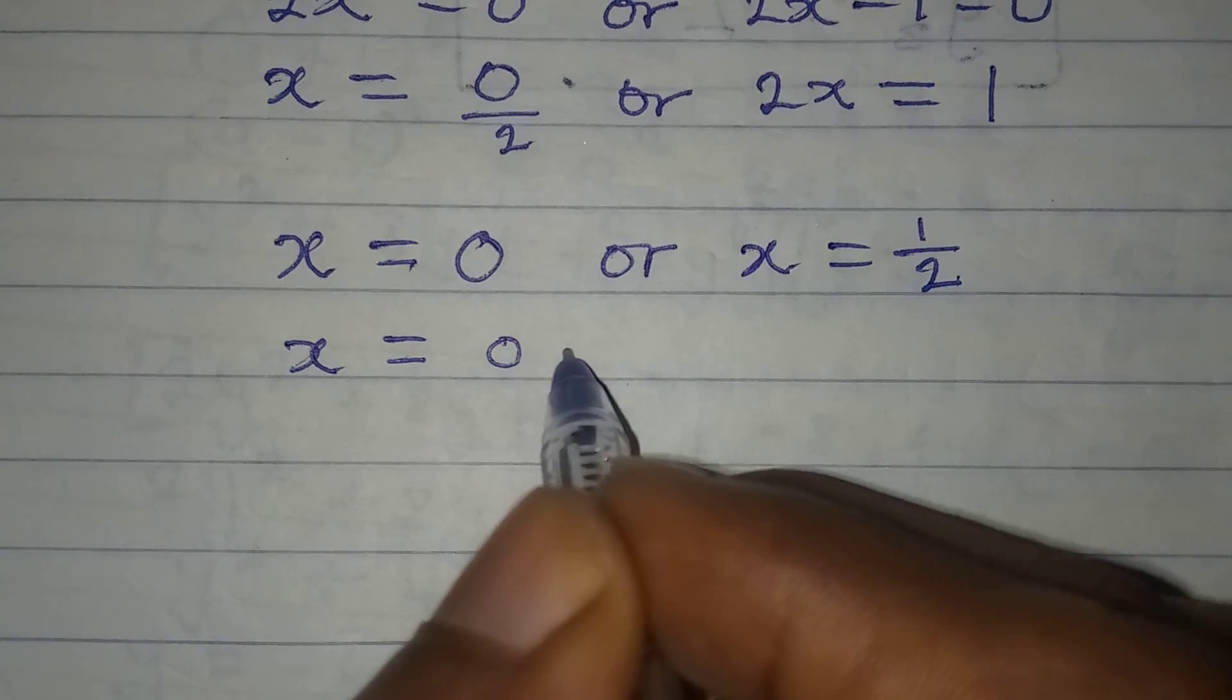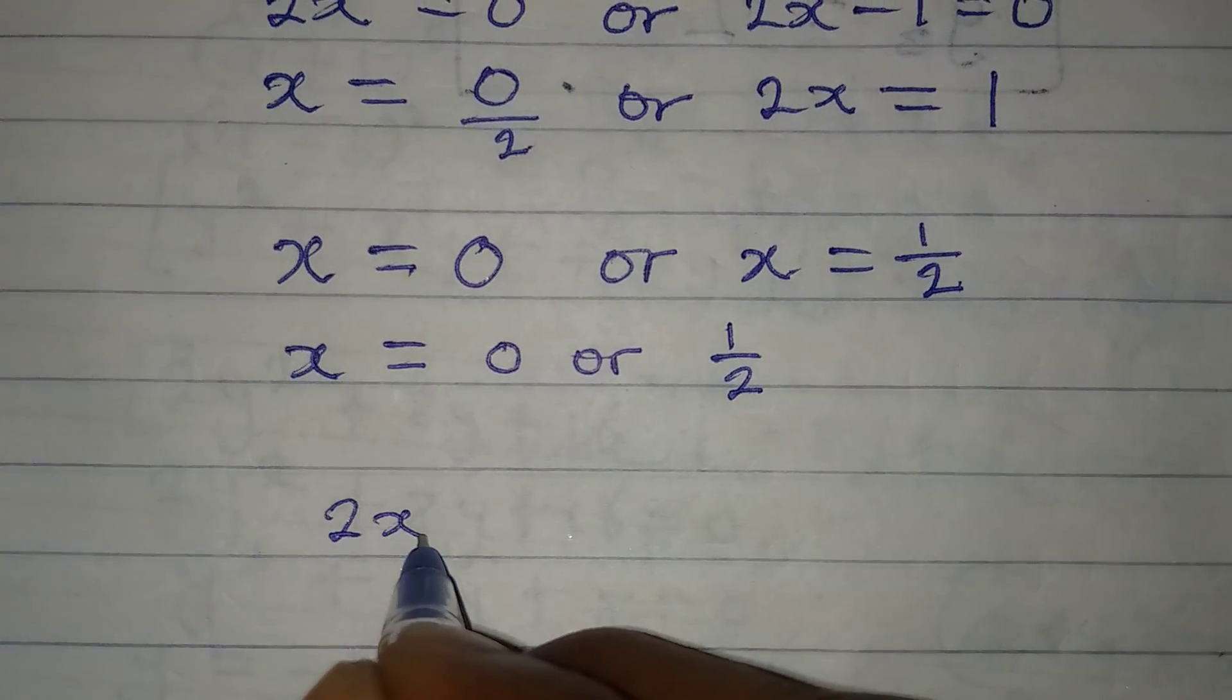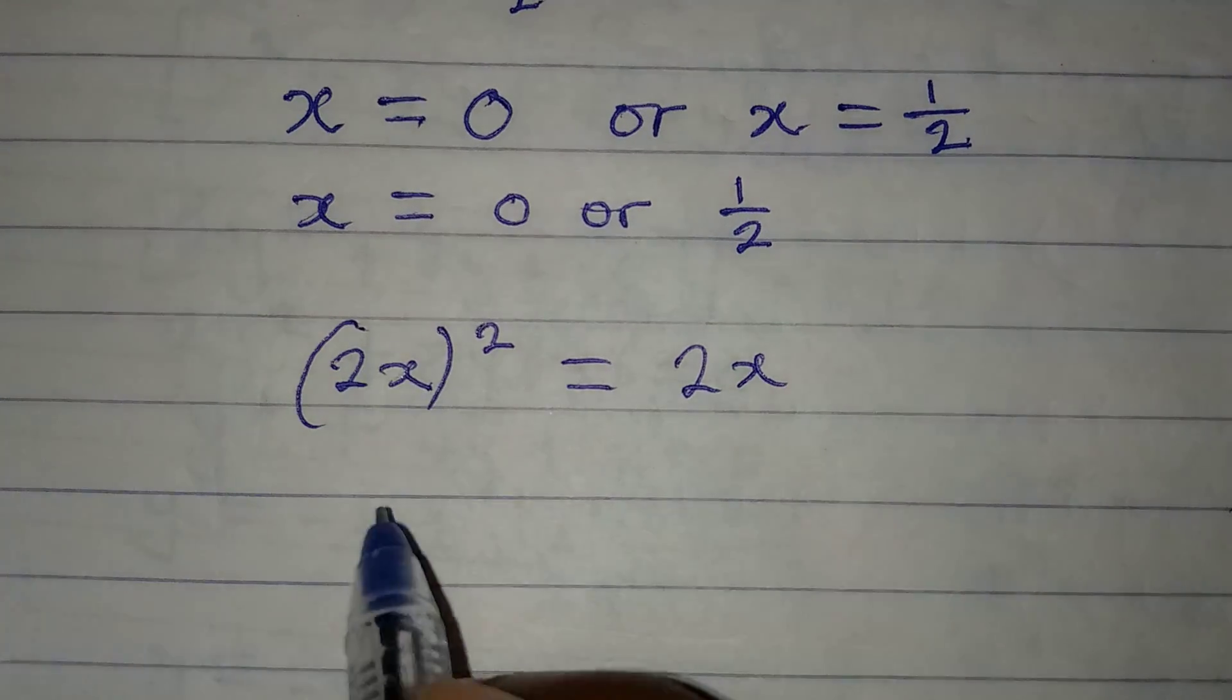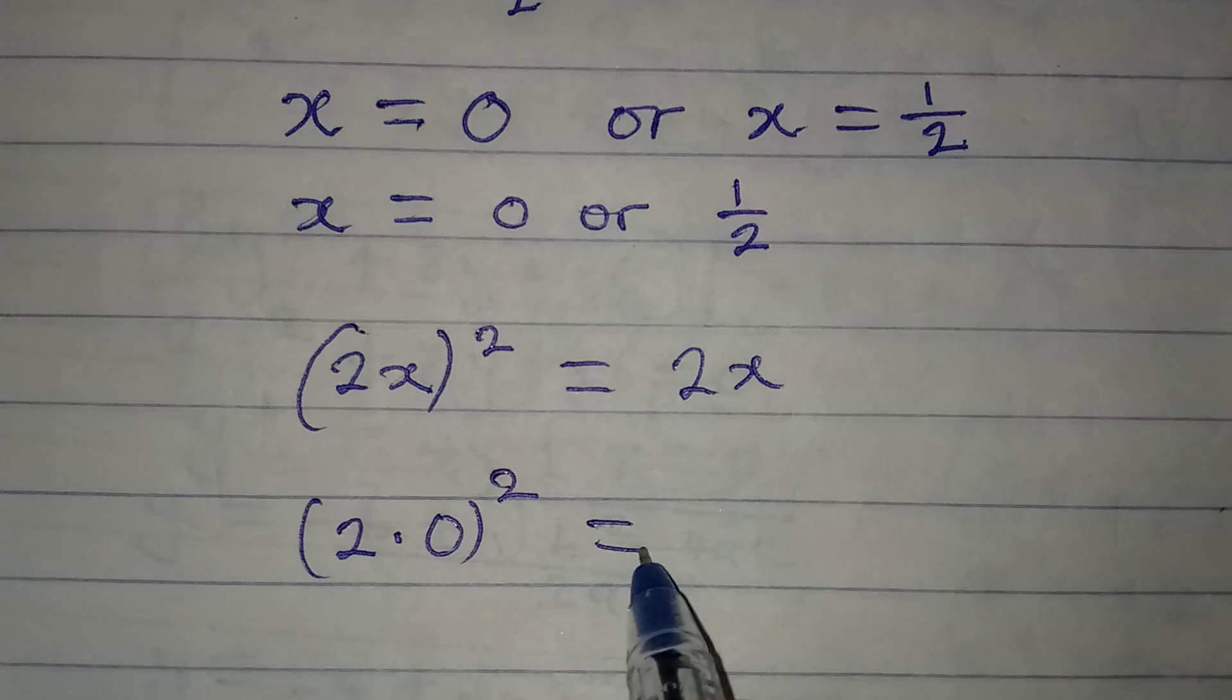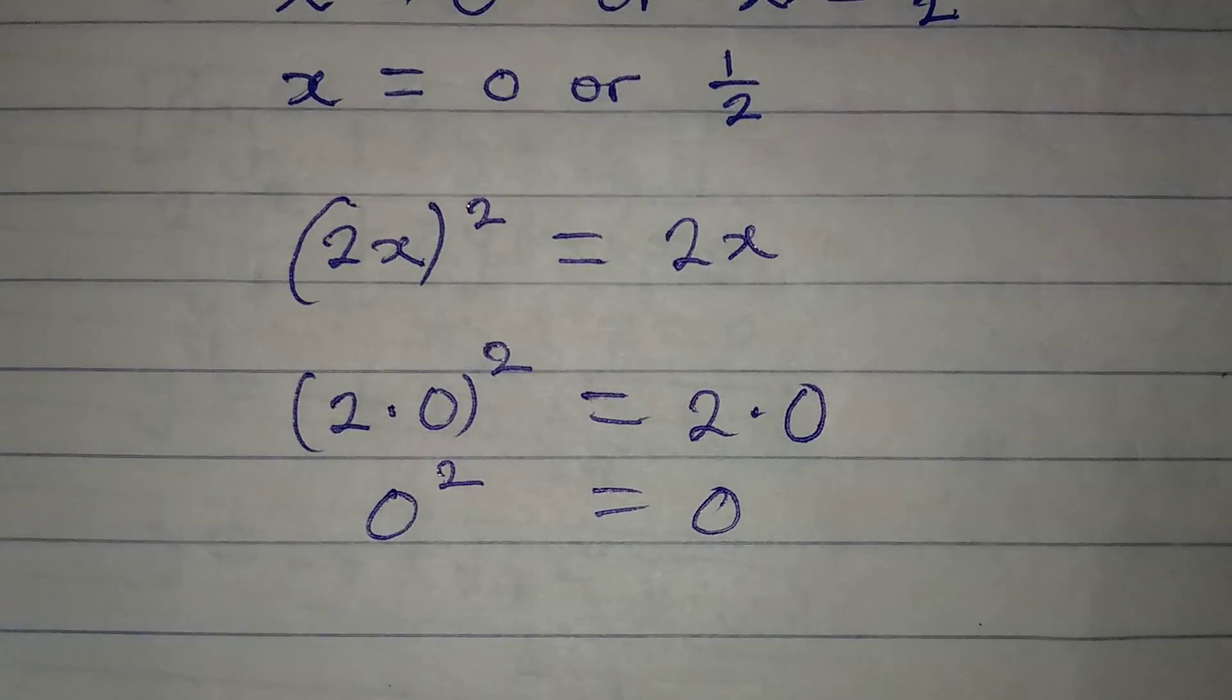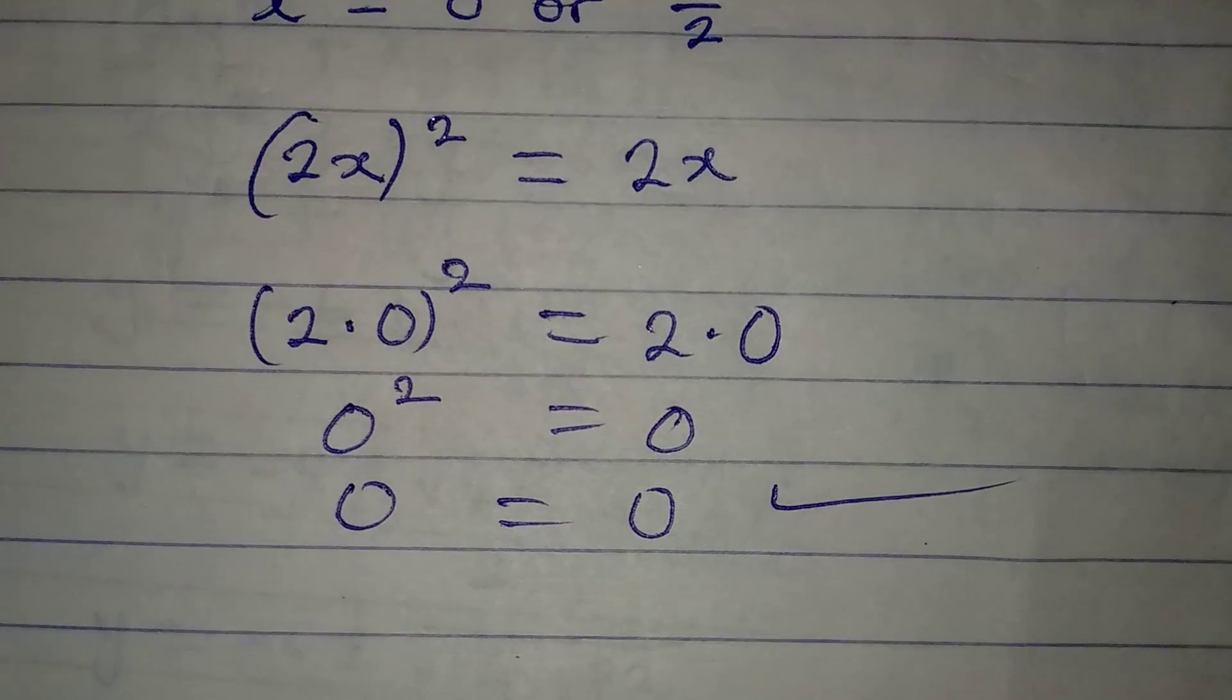The original equation remains (2x)² = 2x. If I put zero in there, that means I have (2·0)² equal to 2·0. Two times 0 will give 0², and 2 times 0 will be 0. Zero squared is still 0, and this means that x equal to 0 is correct.